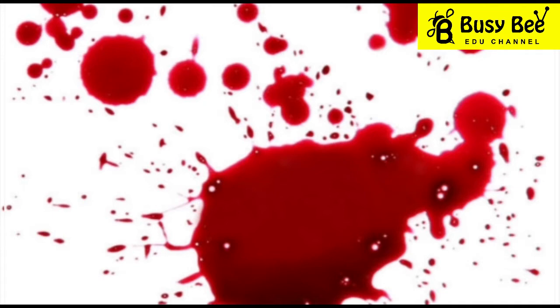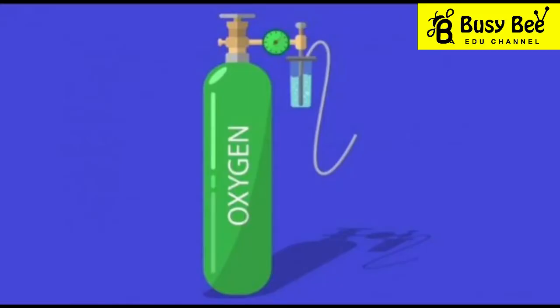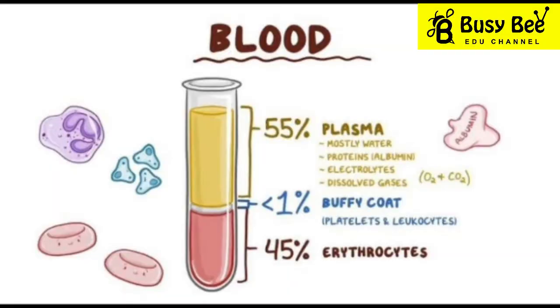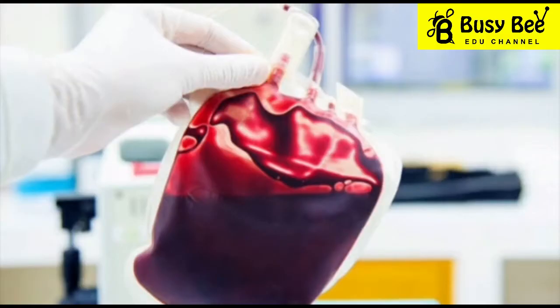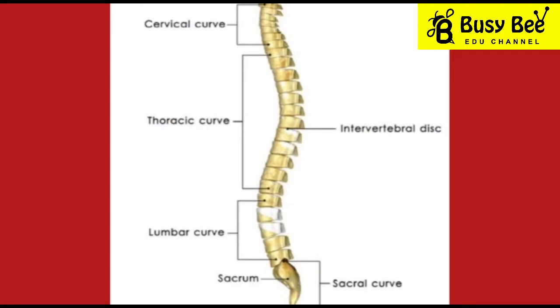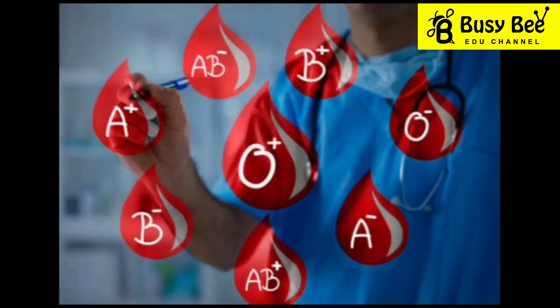Blood is a body fluid in humans and other animals that delivers necessary substances such as nutrients and oxygen to the cells, and transports metabolic waste products away from those same cells. In vertebrates, it is composed of blood cells suspended in blood plasma.